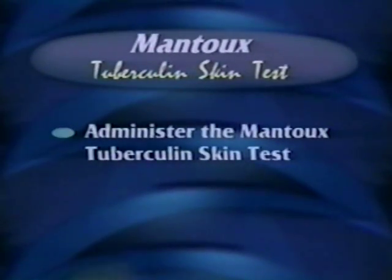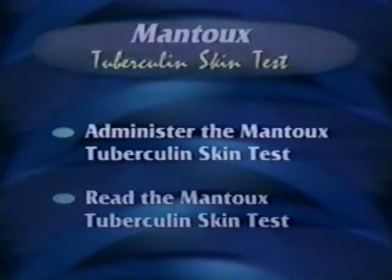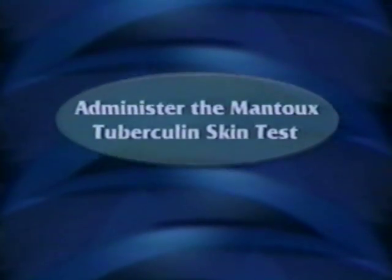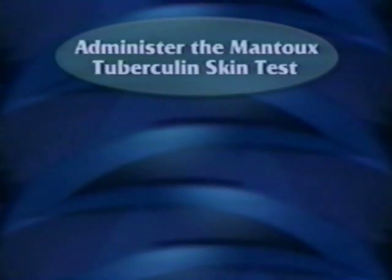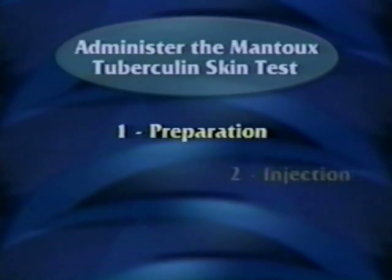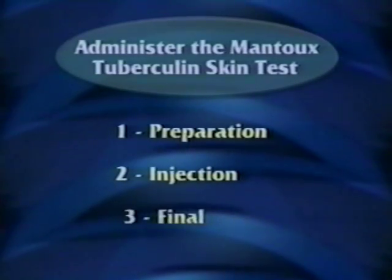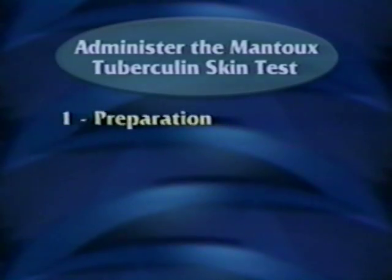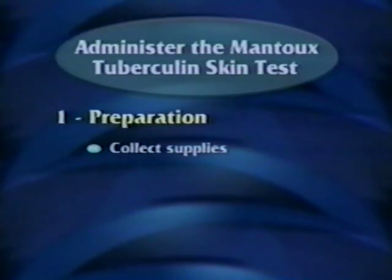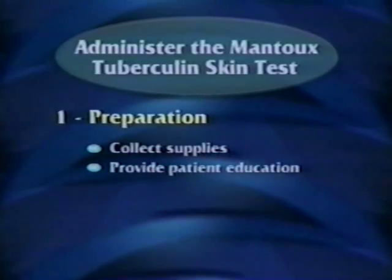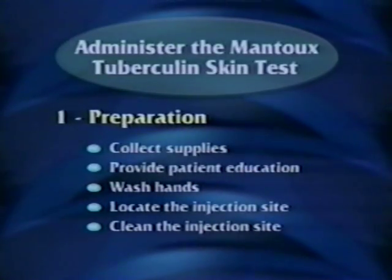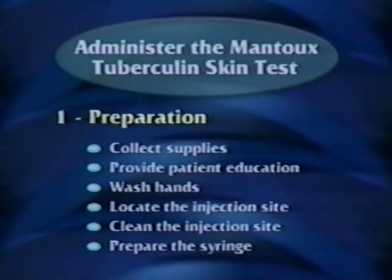The two main parts include administering and reading the skin test. This part of the procedure includes preparation steps, injection steps, and final steps. The preparation steps include collecting supplies, providing patient education, washing your hands, locating and cleaning the injection site, and preparing the syringe.